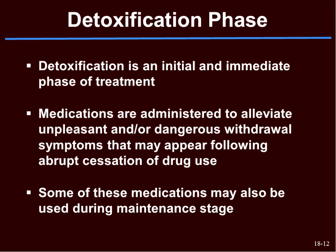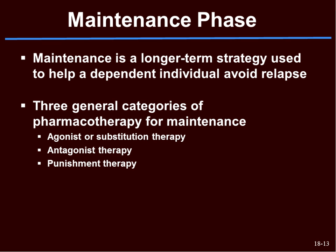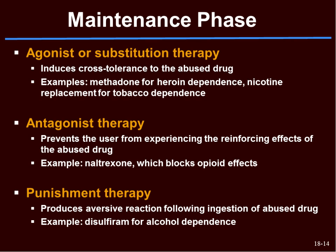In pharmacotherapies there are different phases. First is the detoxification phase — initial and immediate — where medications are administered to alleviate unpleasant or dangerous withdrawal symptoms following abrupt cessation. Then the maintenance phase is a long-term strategy to help a dependent individual avoid relapse. There are three general categories: agonist or substitution therapies, antagonist therapies, and punishment therapies.